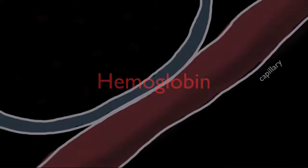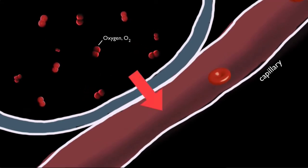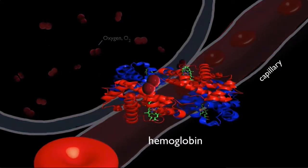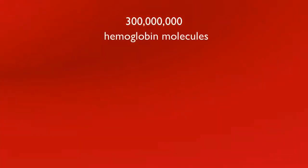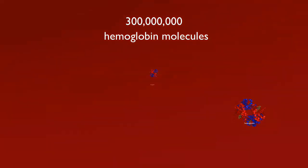Hemoglobin is a very important molecule because it is the molecule that carries oxygen in the blood. Hemoglobin is a protein. There are about 300 million molecules of hemoglobin in a single red blood cell.